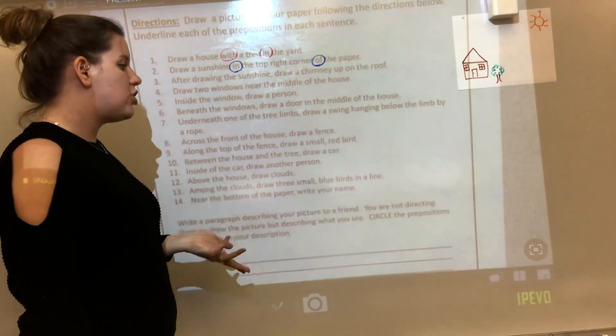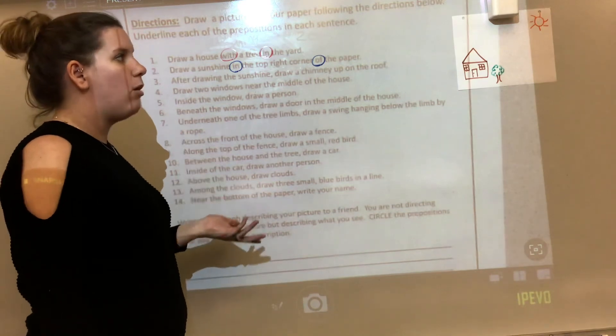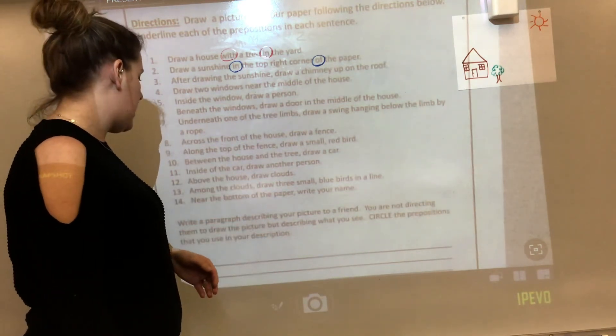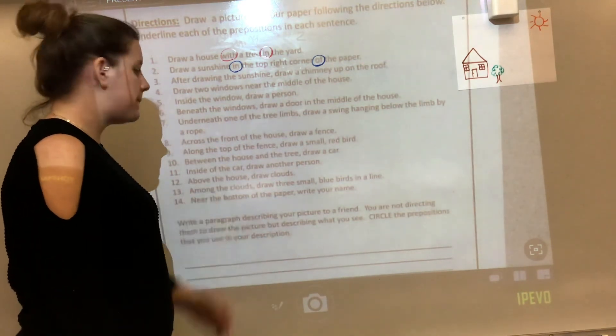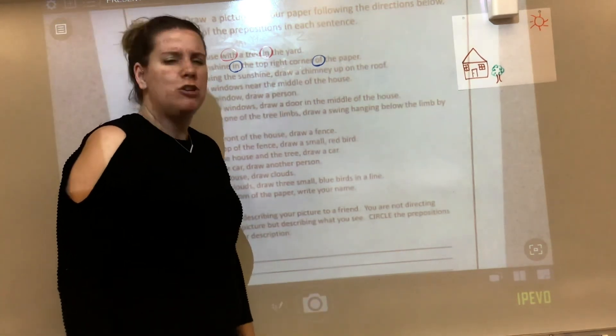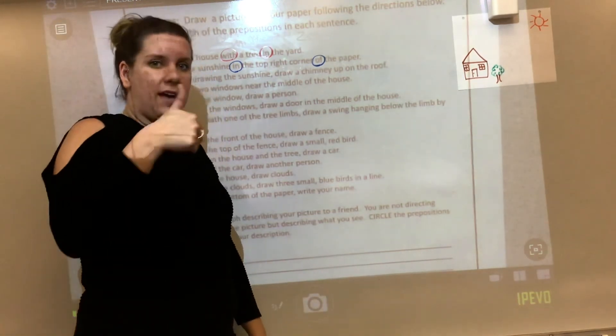And then just write a paragraph describing your picture to a friend. You're not telling them to draw, just telling them about the picture and circle prepositions that you use. Maybe five of them or so. You don't have to circle all of them. Have fun.